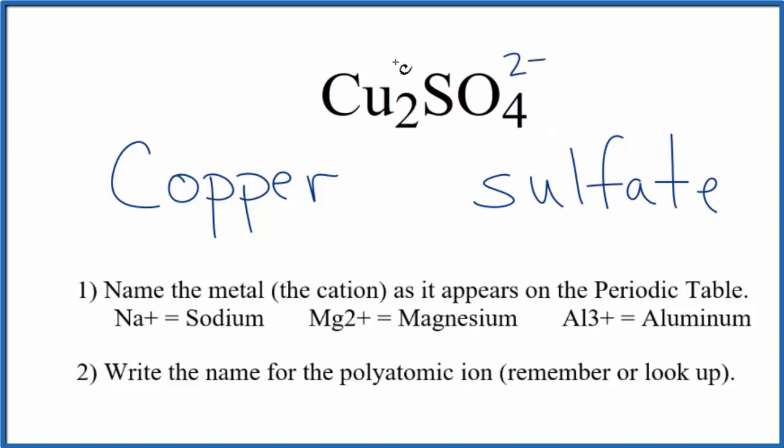So the copper, we need to have a charge of 2 plus over here to balance this out. So we have 2 times 1 plus. That would give us 2 plus. The charge would balance out. So the charge on each one of these copper atoms is 1 plus.